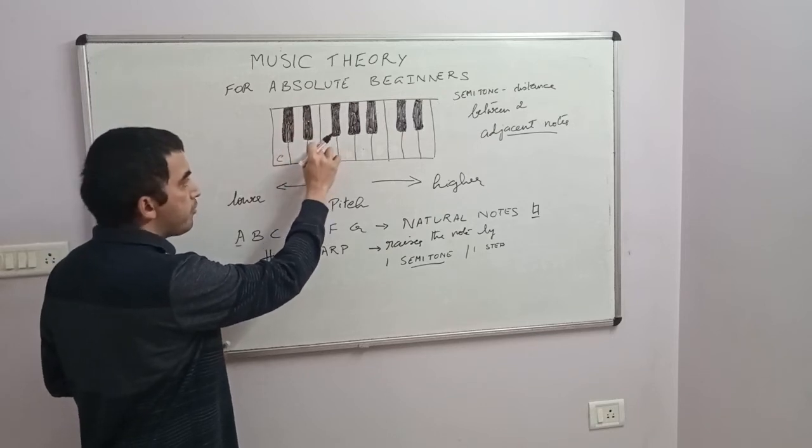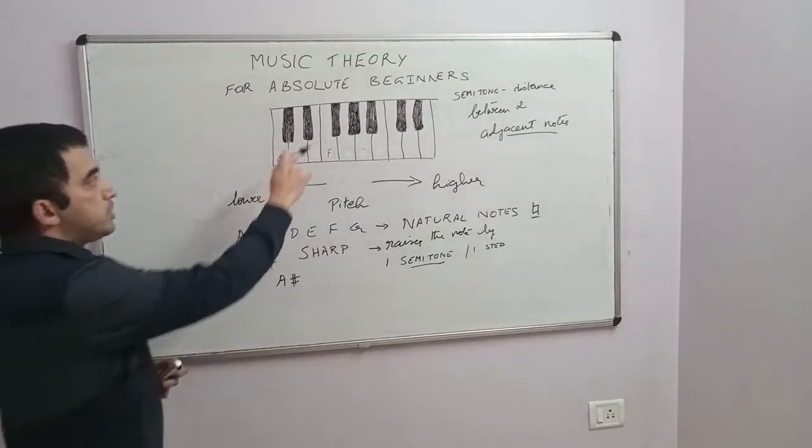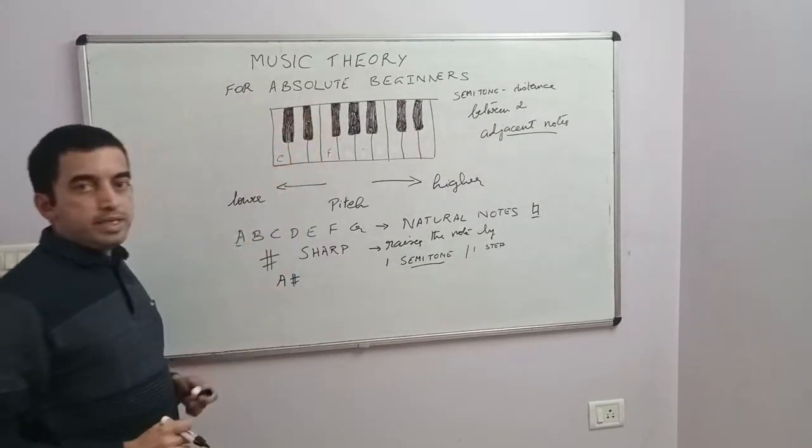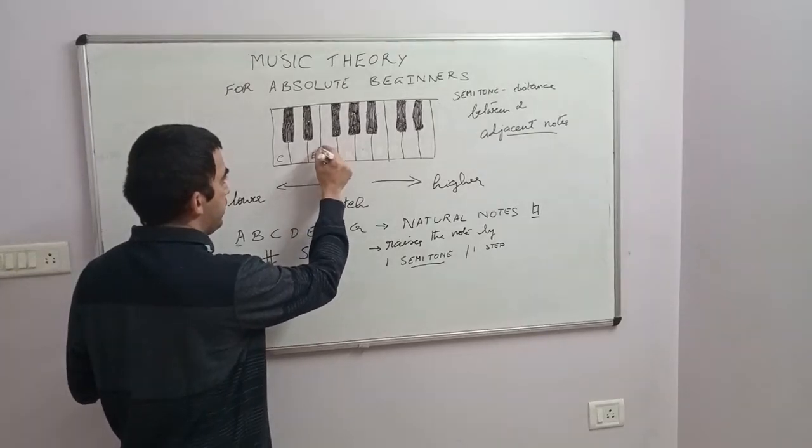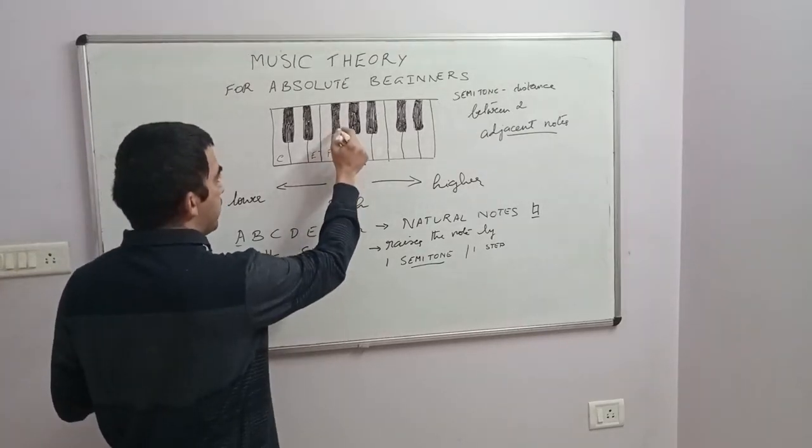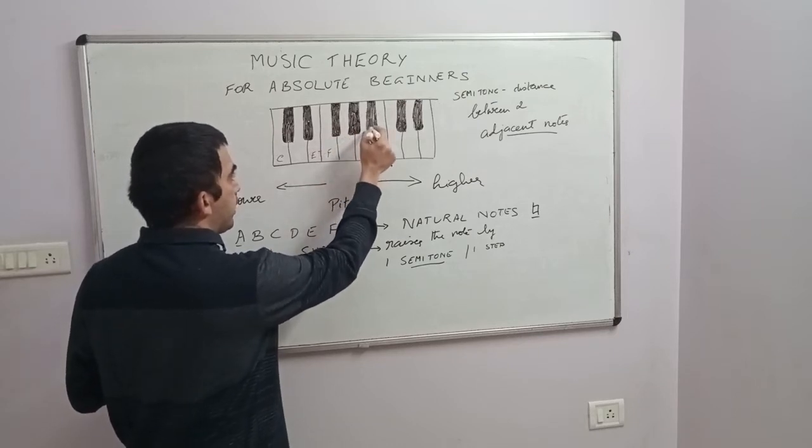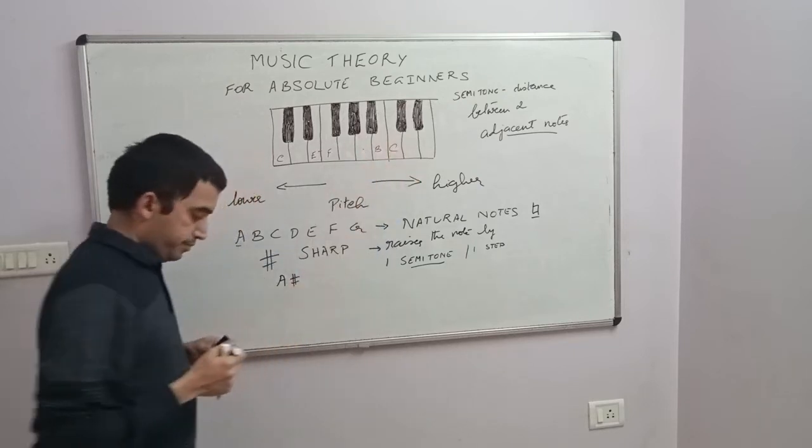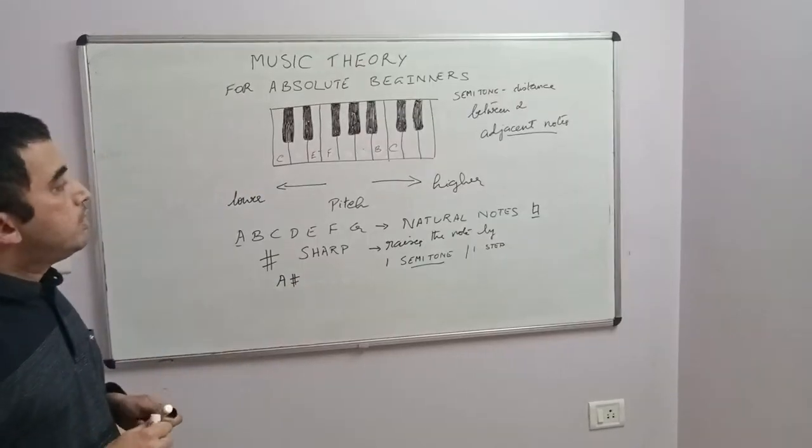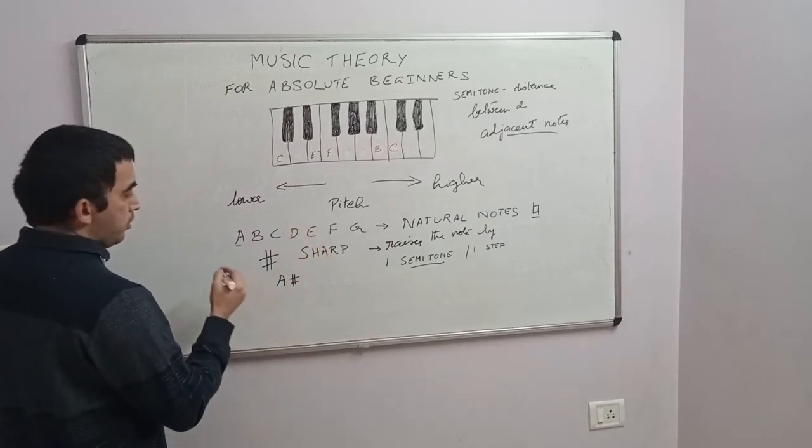E and F become adjacent notes because there is no black key between E and F. Similarly, F to this black, black to G, G to black, black to A, A to black, black to B, and again B and C.